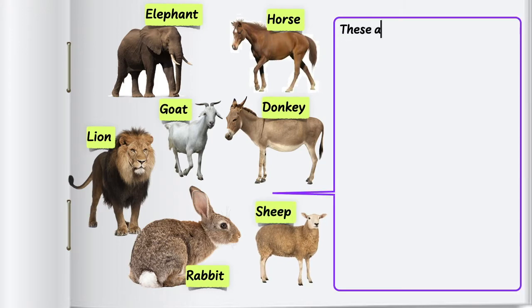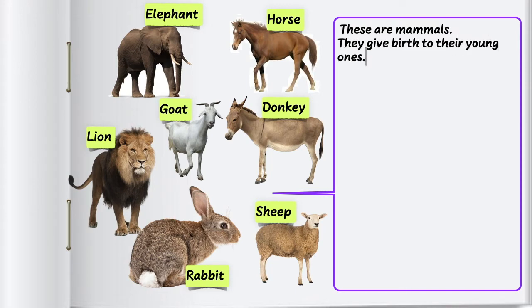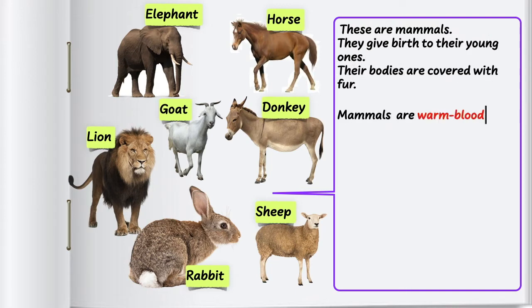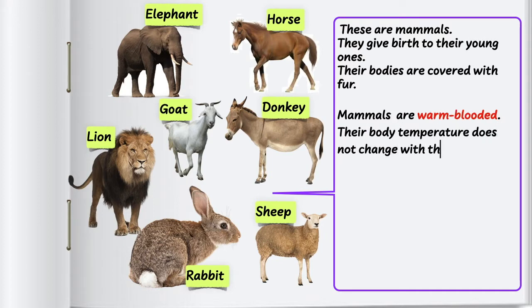These are mammals. They give birth to their young ones. Their bodies are covered with fur. Mammals are warm-blooded — their body temperature does not change with that of the surroundings.